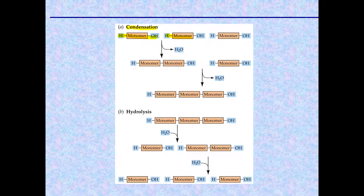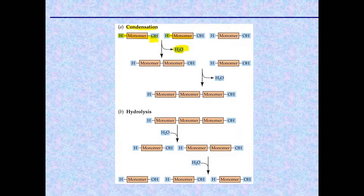This is also known as a dehydration reaction, because in the process of linking any two monomers together, a water molecule is removed. The water molecule originates from a hydroxyl group on the end of one monomer and a hydrogen at the end of the other, and so these covalent bonds are made.